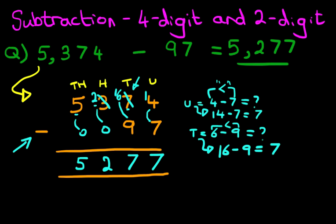5,374 minus 97 is 5,277. That is correct. So we got a nice big tick. So that is how we do subtraction of a 4-digit number and a 2-digit number using the vertical format.